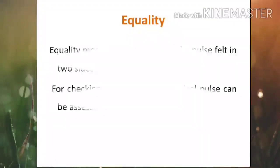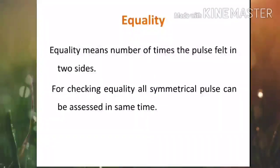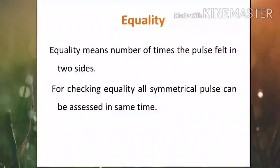Next is equality, which means the number of times the pulse is felt on two sides. Sometimes the pulse in one extremity may be absent in cases of thrombus formation. For checking equality, symmetrical pulses can be assessed at the same time, but never palpate the carotid pulse on both sides simultaneously because excessive pressure may obstruct blood flow to the brain.